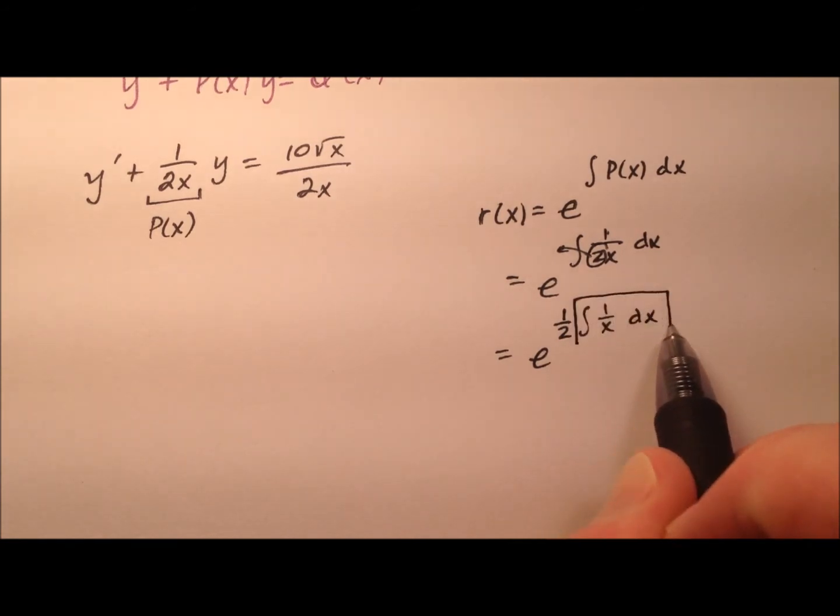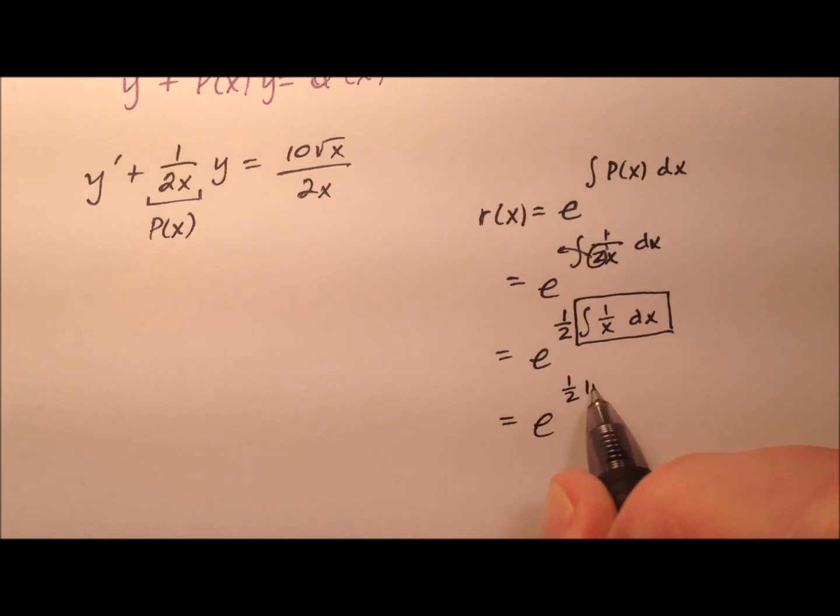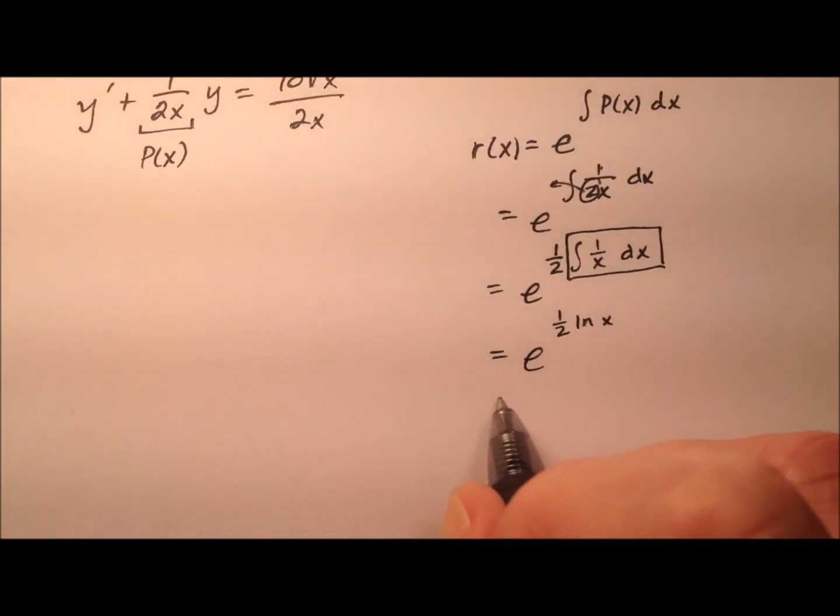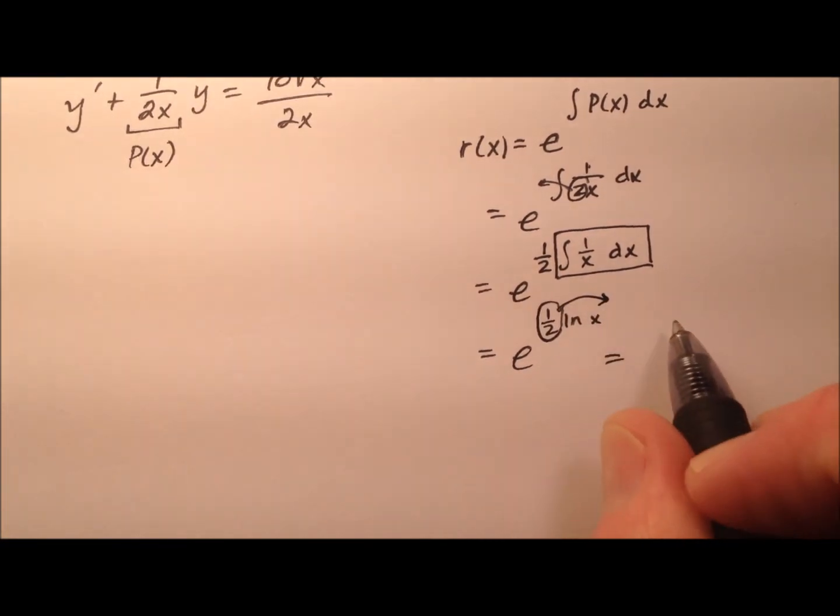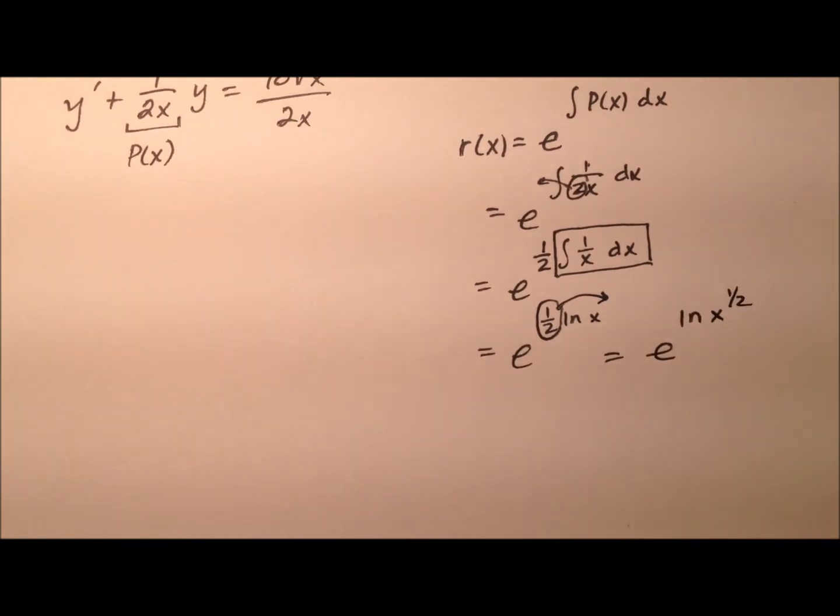And this integral right here is pretty standard. This is just going to be ln of x. So I'll write it that way. And what we can do with this 1 half is use our properties of logs and create this as an exponent. So e to the ln of x to the 1 half.